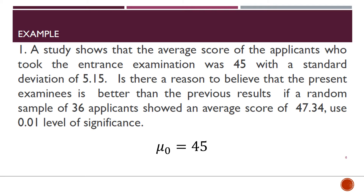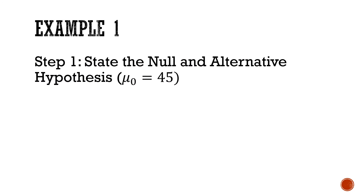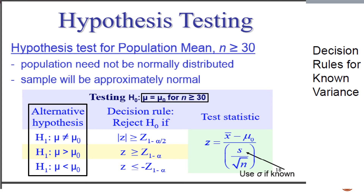To start with, let us set the hypothesized mean as 45. Step one is to state the null and alternative hypothesis. Here we have the guidelines in constructing the null and alternative hypothesis, as well as when to use them, the test statistic, and the decision rule.